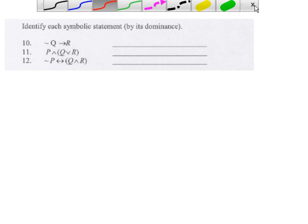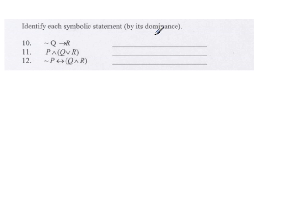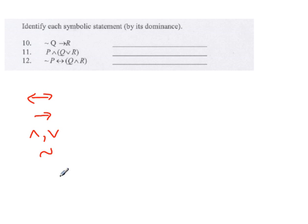Number 10. Identify the symbol by its dominance. Remember the dominance order of operations. Biconditional is first — it's the most dominant — followed by the conditional. The conjunction and disjunction, which are 'and' and 'or', have the same level of dominance. It just depends on the parentheses. And just like in any math order of operations, if you want to change the order of operations, you use parentheses.